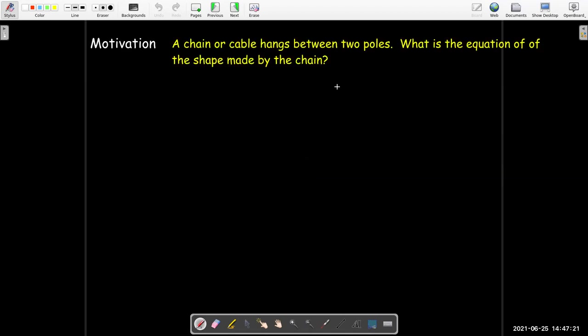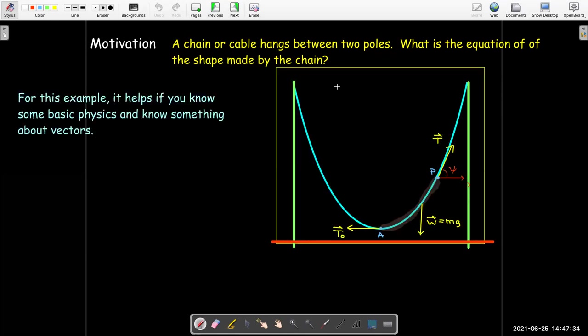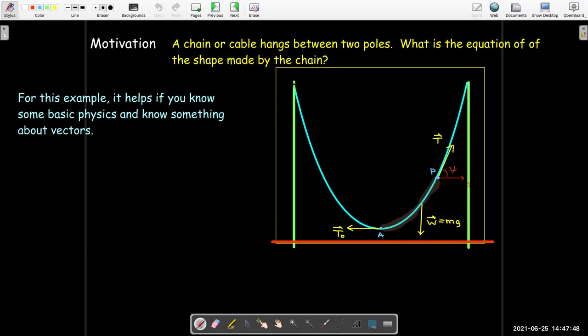Our physical model is to take a chain or a cable and hang it between two poles, and we'd like to find the equation of the shape made by the chain. I have the ground here as the red line, the two green lines represent the poles, and this blue curve represents the shape of the chain.